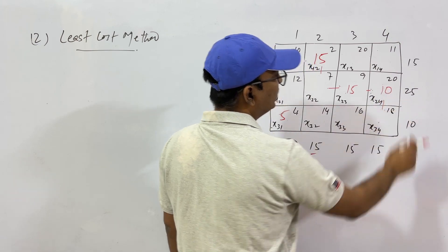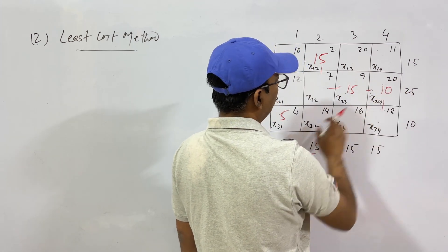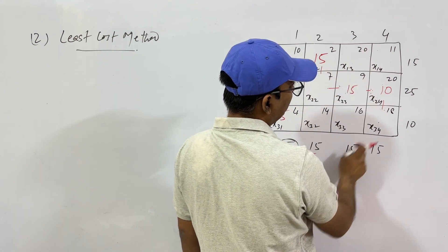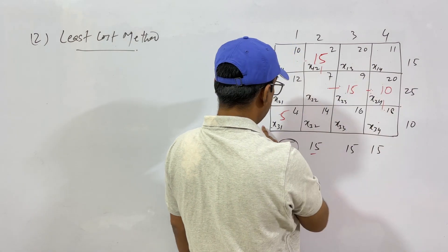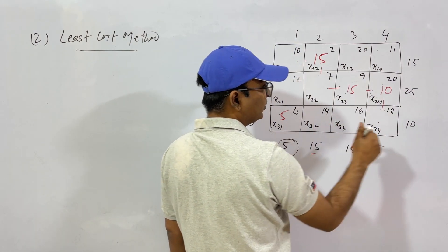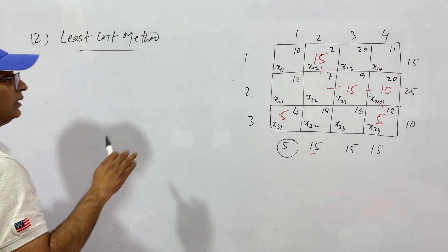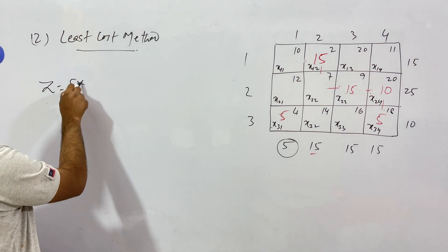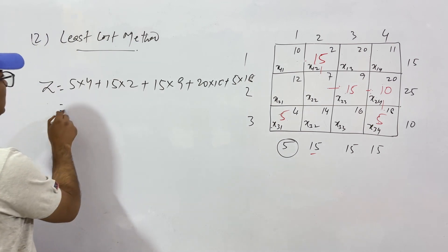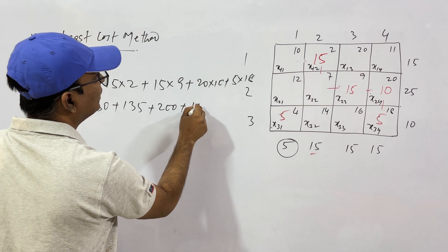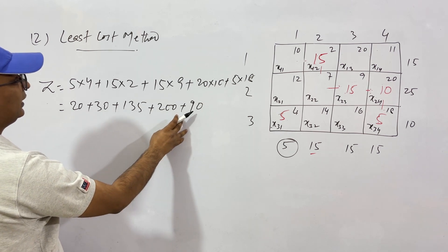10 is left from the second source, with no other option, so allocate 10 to the fourth column. The third source produced 10 items and we allocated 5 already; 5 remain. Supply and demand are balanced. The cost is: 5×4 + 15×2 + 15×9 + 20×10 + 5×18 = 20 + 30 + 135 + 200 + 90 = rupees 475.